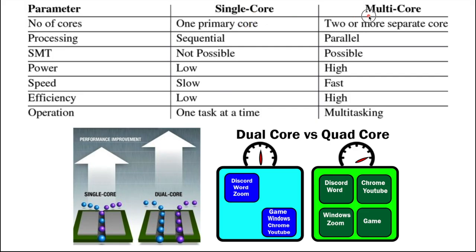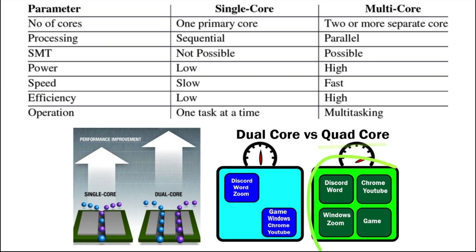Comparing single-core and multi-core processors: with a single-core processor, all commands are done sequentially one after the other, whereas multi-core allows commands to run at the same time. A multi-core processor requires more electricity, but is faster, more efficient, and allows for multitasking. Looking at the diagram, a quad-core processor with the same speed as a dual-core can run more applications simultaneously. This highlights the difference between sequential operations of a single-core and the parallel operations of a multi-core processor.